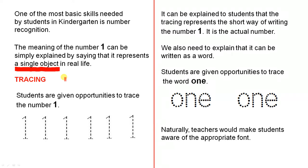Now tracing is a very important skill for kindergarten students because it's a very important fine motor skill. So students are given opportunities to trace the number one, and this is just an example of what they could be given, and they can be given many more examples than this one. It could be a whole sheet.